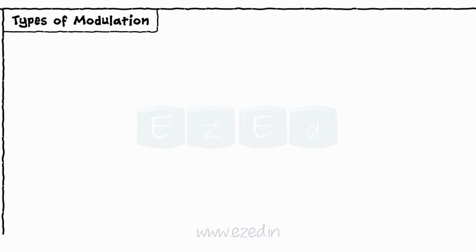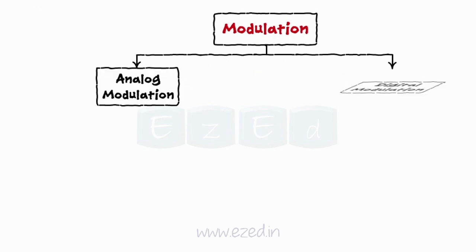Based on this, modulation is divided into two types such as analog modulation and digital modulation.